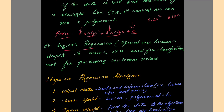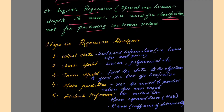There is one more type called logistic regression — this is a special case. Despite its name, it is used for classification, not for predicting continuous values. All other regression models are used to predict continuous values, whereas logistic regression is used for classification. The steps in regression analysis are: collect the data, choose the model, train the model, make predictions and evaluate performance.